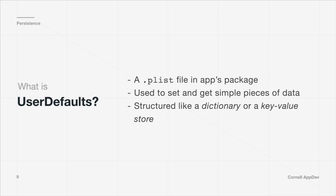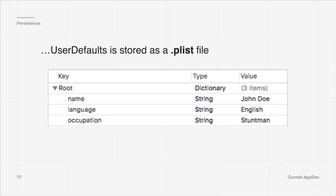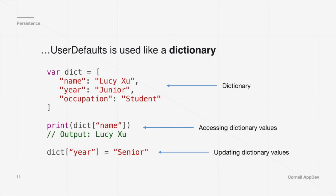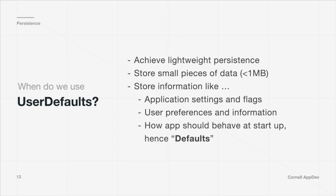UserDefaults is one of the main methods used to achieve lightweight persistence in apps. It is basically a plist file in your app's package that you can use to set and get simple pieces of data. We can think about this plist file as a dictionary or a key-value store. You have a key, a type for the value, and the value associated with the key — very similar to a dictionary you've worked with before.